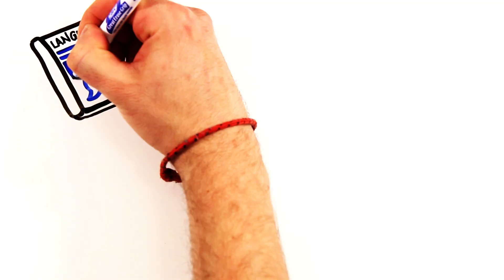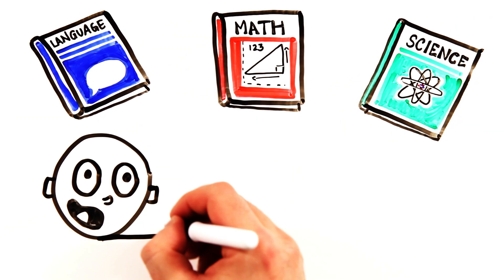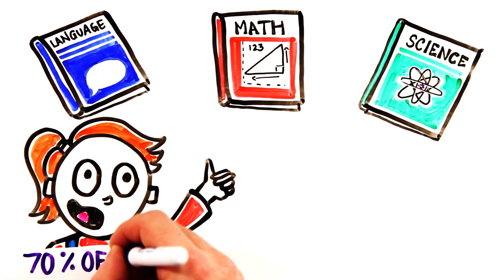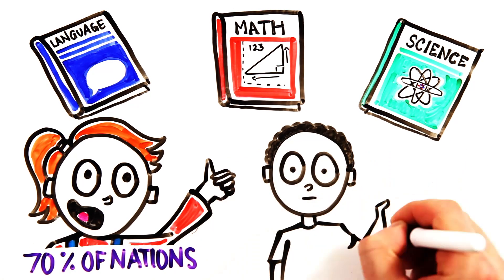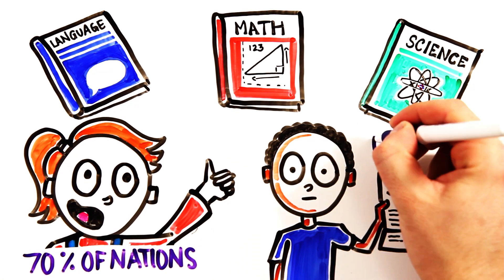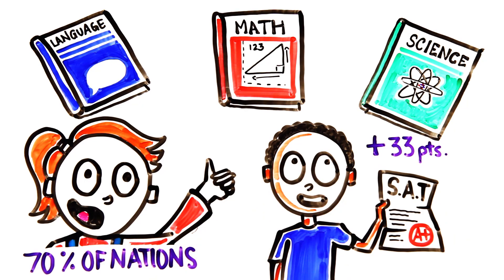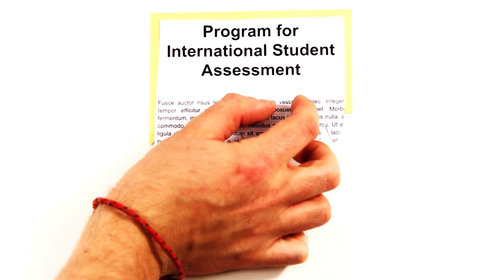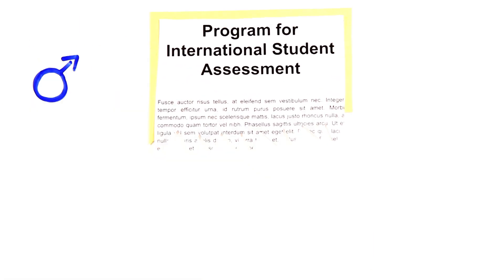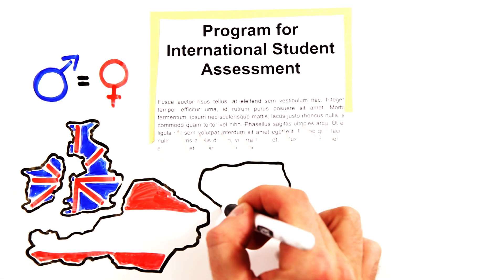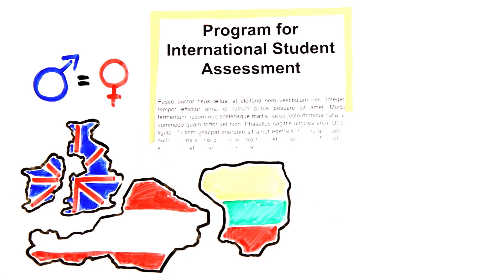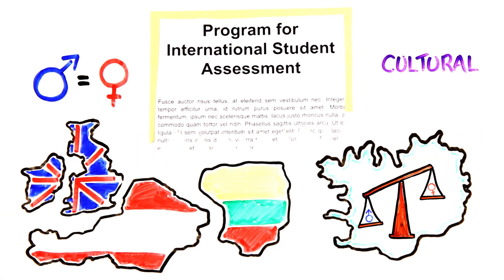In academic performance of language, math, and science, women consistently receive better grades in 70% of nations. But on SAT testing in the US, men score 33 points higher in math and science. Other tests, like the Program for International Student Assessment, show both sexes performing equally in several countries, with girls performing better in some, like Iceland, suggesting cultural and environmental differences, and not necessarily biological differences at play.